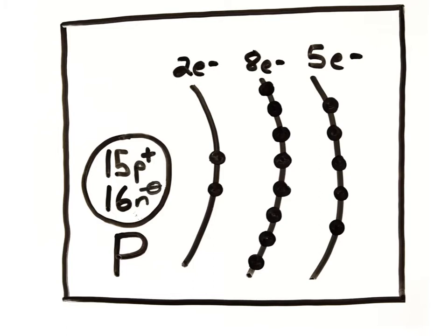For example, an atom of phosphorus has a total of 15 electrons. There are two electrons in the first shell, eight electrons in the second shell, and the remaining five electrons in the third shell.